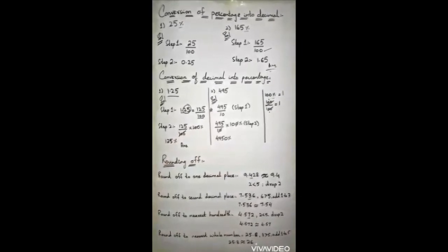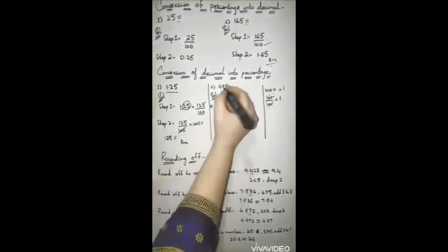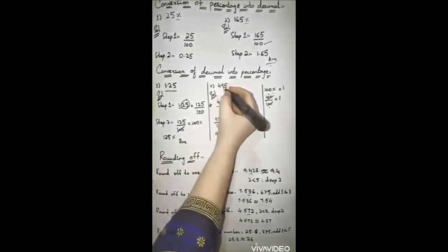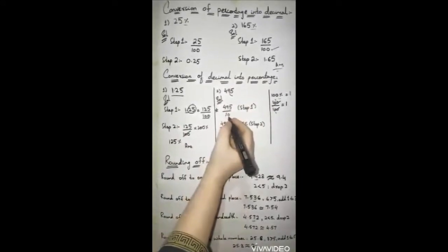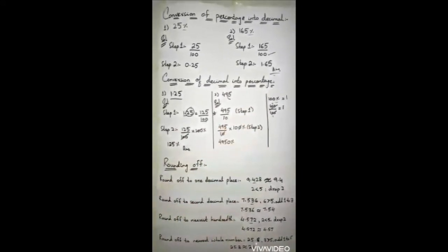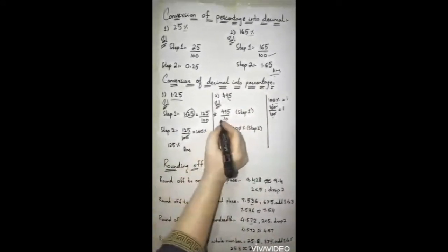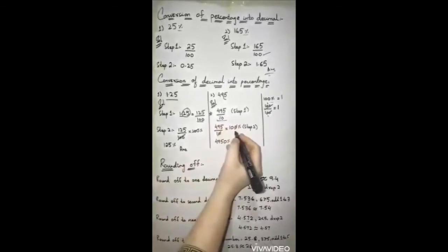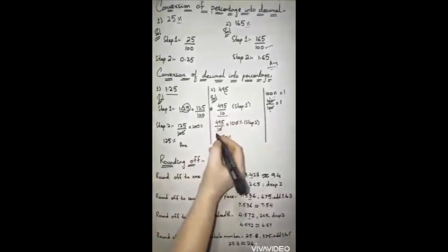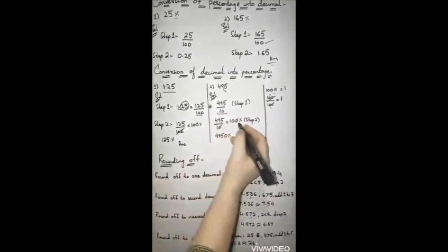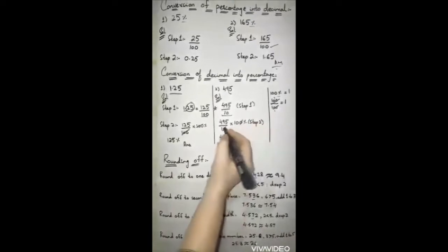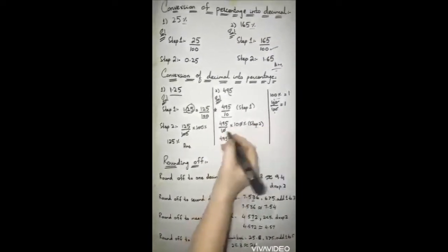Example two: 49.5. You remove the decimal point. Since there is only one digit after the decimal point, you write 10 as the denominator, giving 495 upon 10. Step two: multiply by 100 percent. The zeros cancel, giving 495 multiplied by 10 percent — so 4950 percent is the answer.